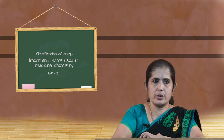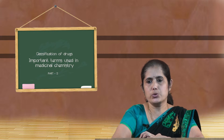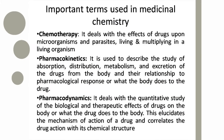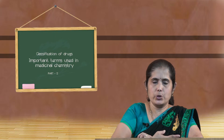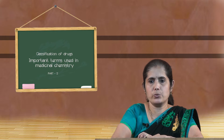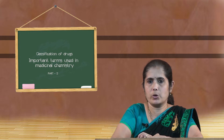The next term is pharmacokinetics. It is used to describe the study of absorption, distribution, metabolism and excretion of a drug from our body and their relationship to the pharmacological response. In short, we can say that it is what the body does to the drug. We take the drug inside but we don't know what is happening to it. We know that it produces its pharmacological action.